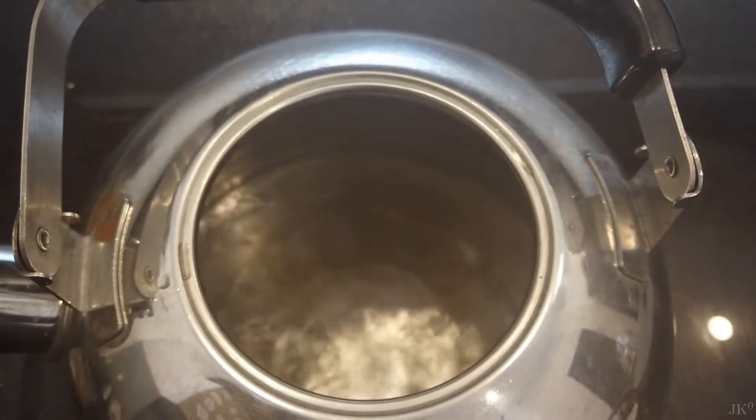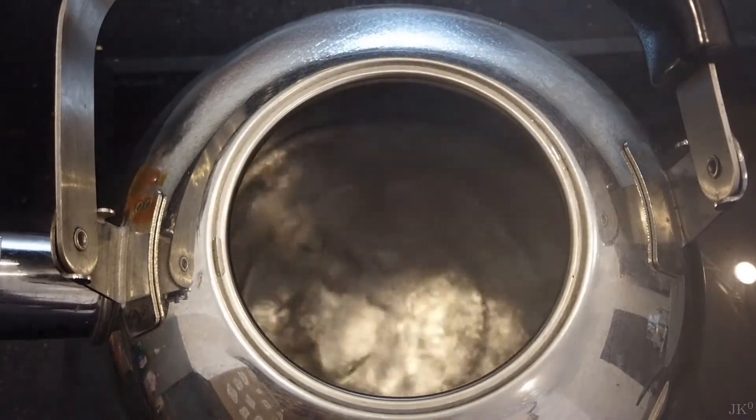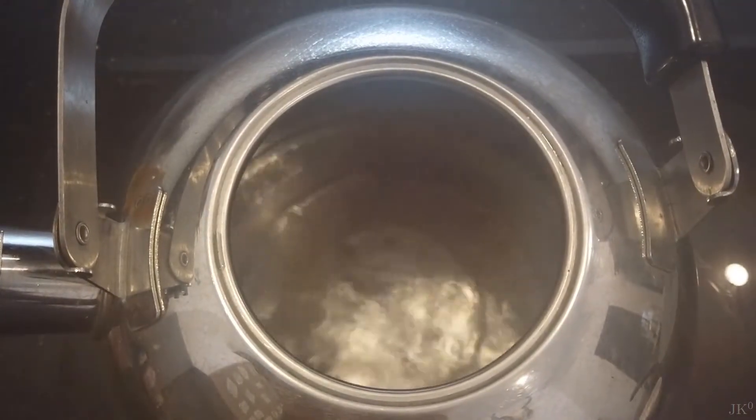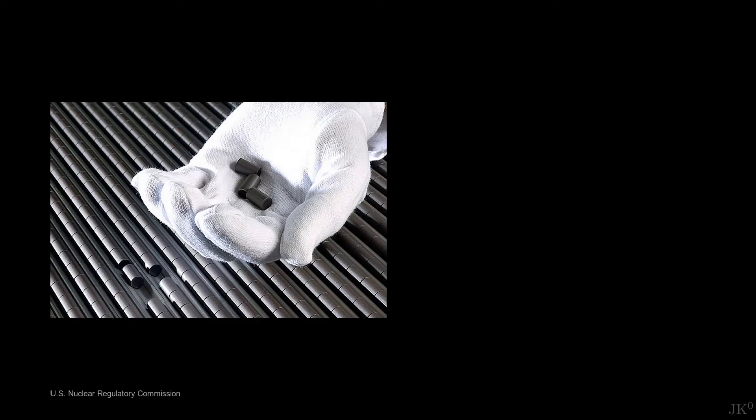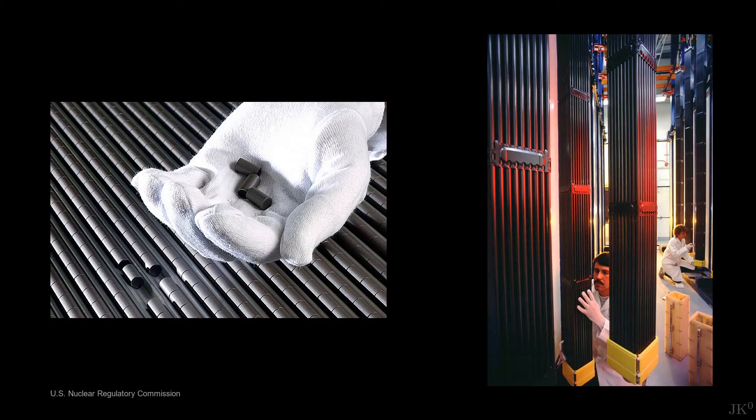Nuclear power plants are high-tech kettles. They use the heat released by nuclear fission to boil water, generating steam, which in turn spins turbines to generate electricity. Uranium is packed into small fuel pellets. These pellets are put inside long rods, and many of these rods are bundled together in the form of fuel assemblies.